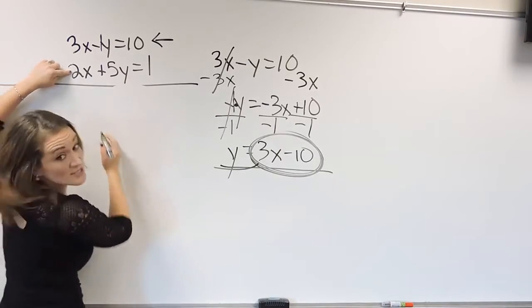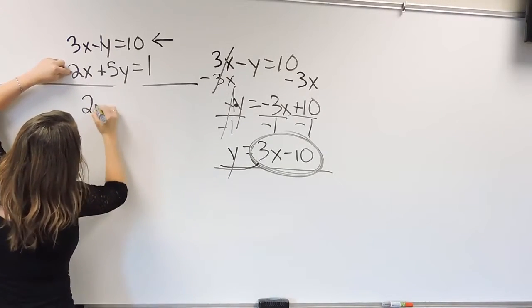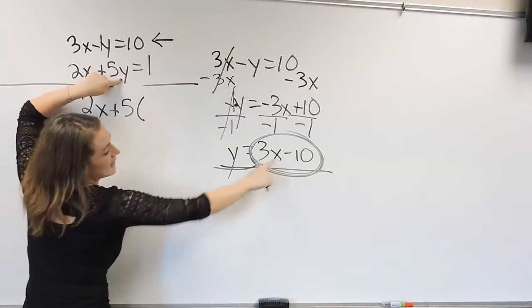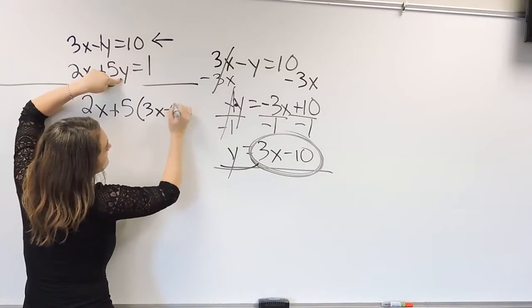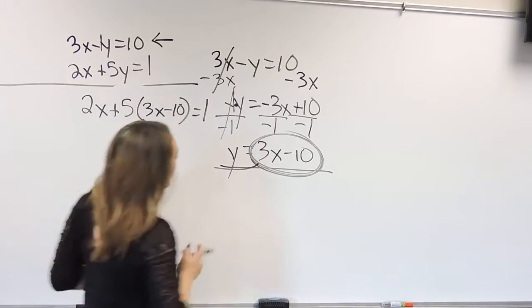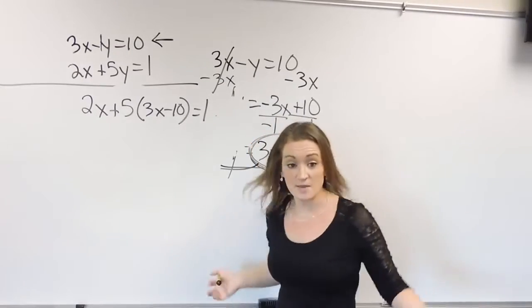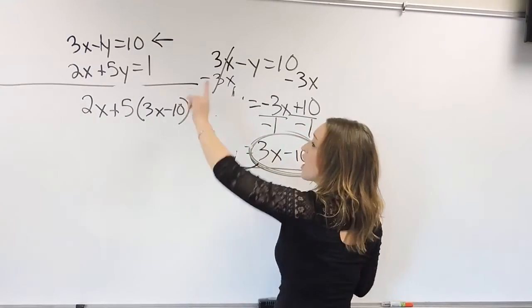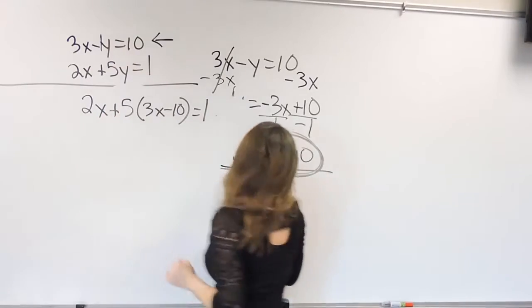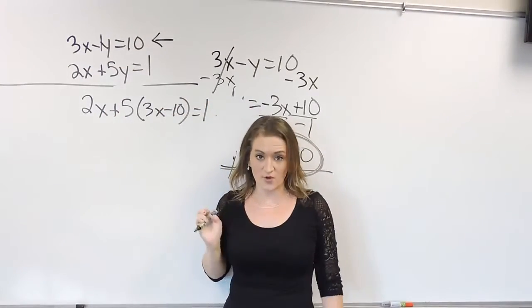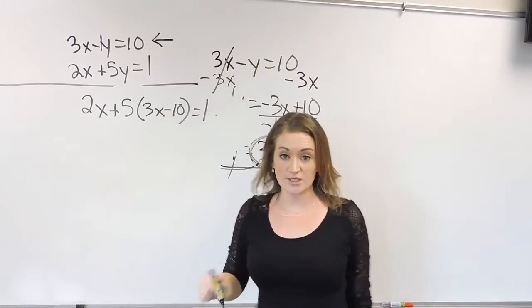Now what that's going to look like, so I'm going to take this equation here, so 2x plus 5, and instead of y, I'm plugging in 3x minus 10, and this equals 1. So this is where the substitution comes in. So we solved one equation for a variable, and then we took that and plugged it in into the other equation. Now we need to solve this equation.